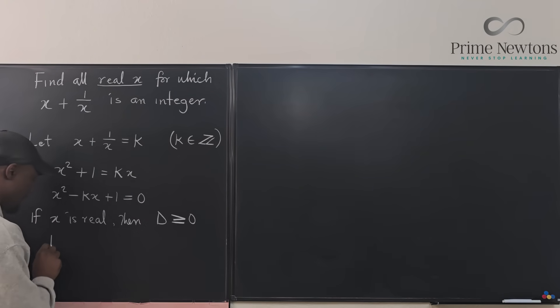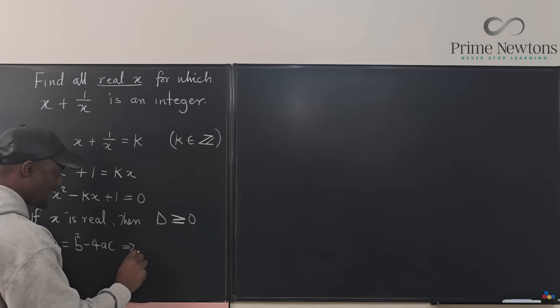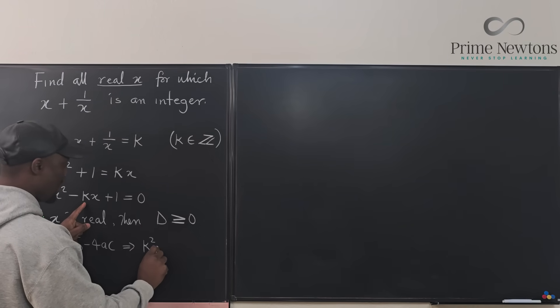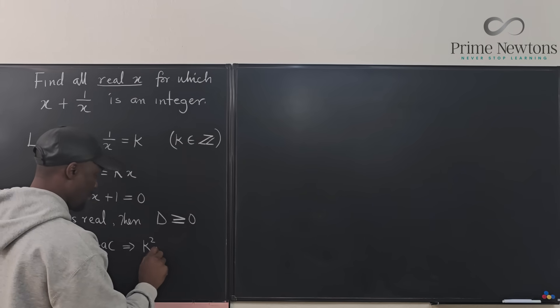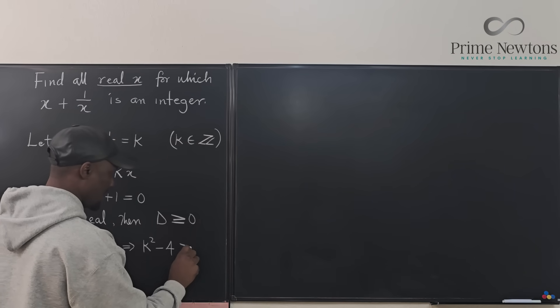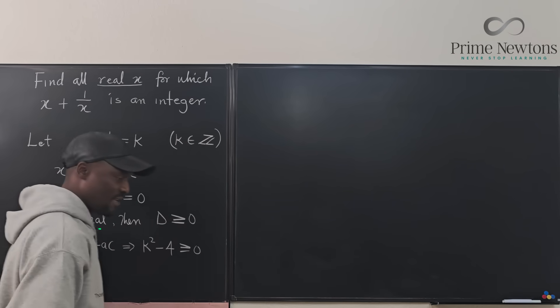If x is real, then d must be greater than or equal to 0. Remember what d is? Our d is b squared minus 4ac. Which implies that our b squared is going to be k squared. 4ac is going to be 4 times 1 times 1, which is 4.